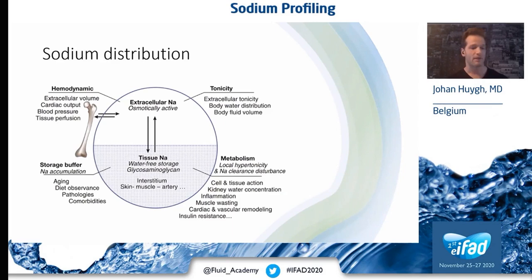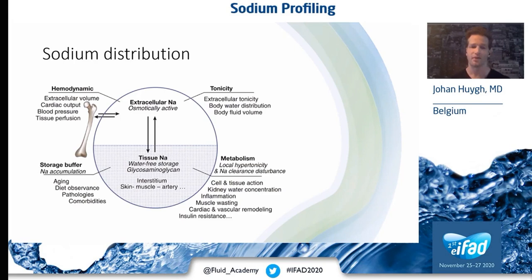More recently, we've described a three-pool system to describe the sodium distribution in the bodies of our end-stage renal disease patients. First and foremost, we have the extracellular sodium, which is well known, which is osmotically active, and has a slow exchange with the second pool: bone. There's also a third part — tissue sodium — whereby sodium is stored in skin and muscle interstitium, bound to aminoglycans and other proteins. This is primarily a water-free storage, meaning there is hypertonicity in skin and interstitium, possibly causing hypertension and fluid retention.